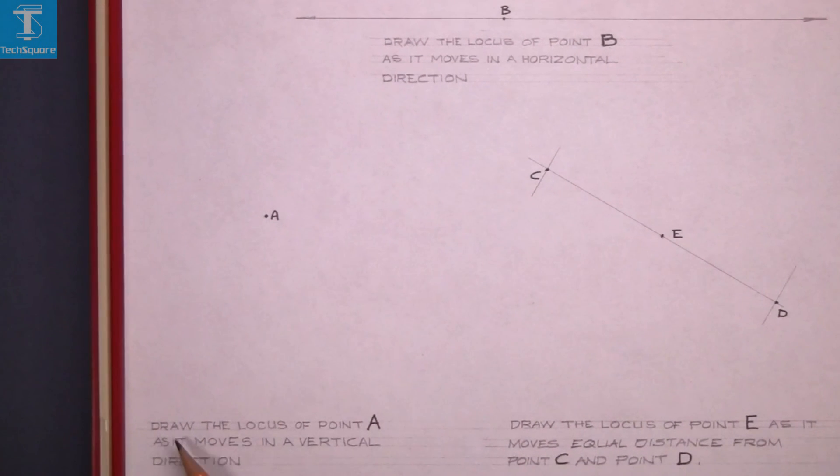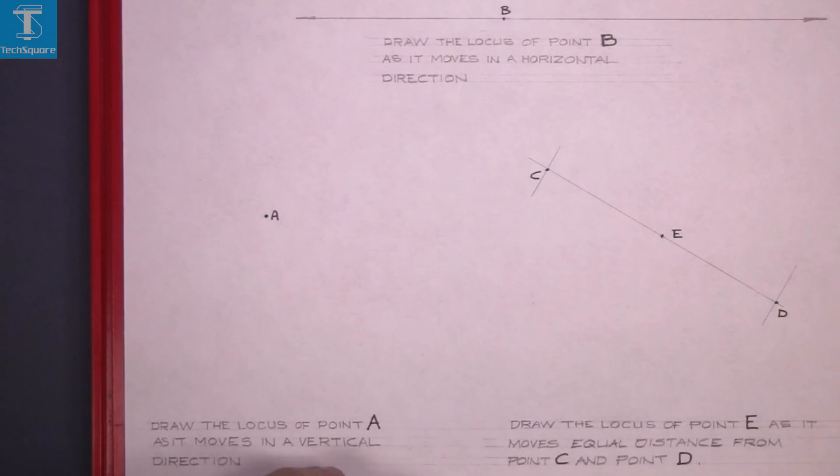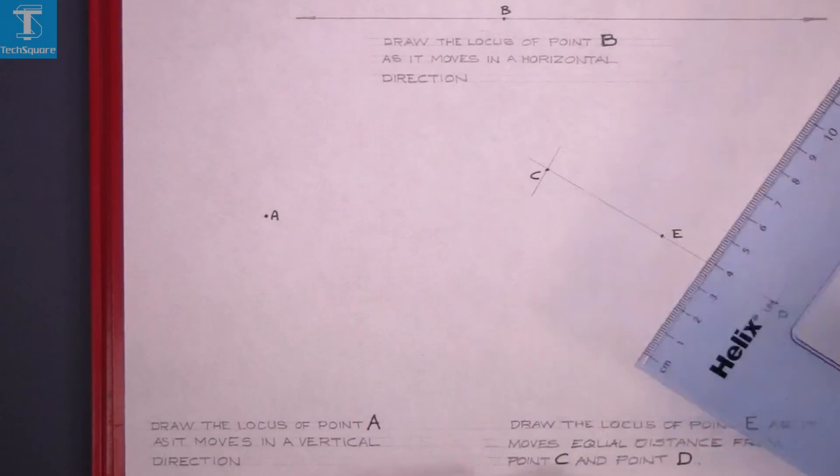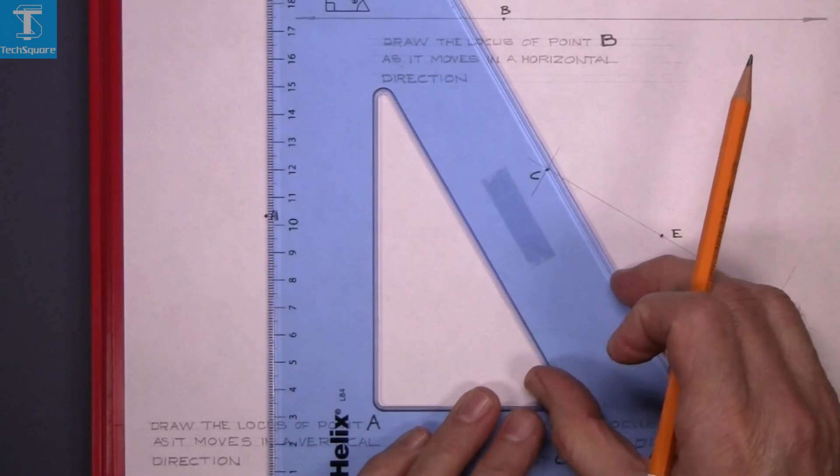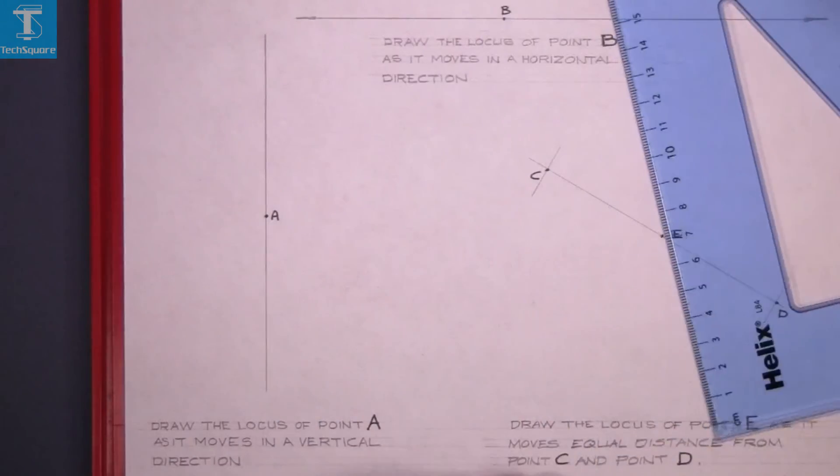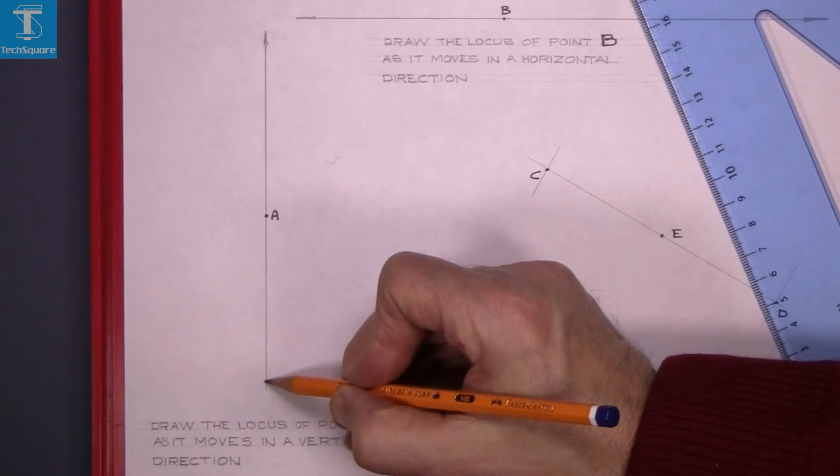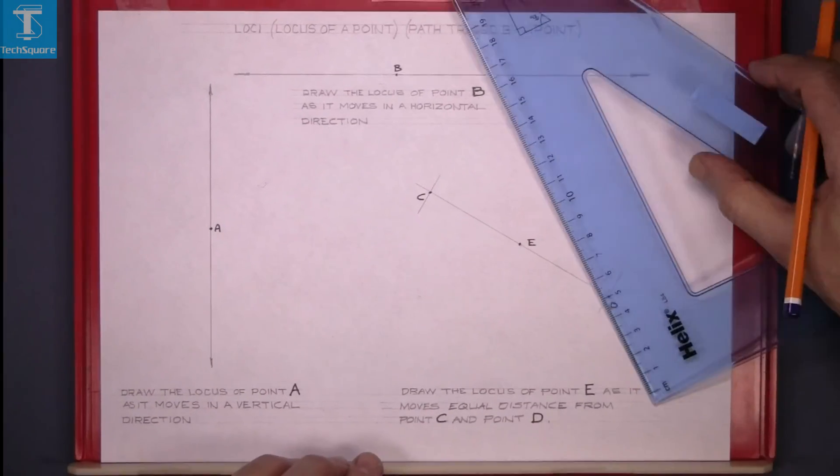Now the next question here is: draw the locus of point A as it moves in a vertical direction. So we have point A here. So we draw a vertical line through A and that answers that question. That's the path traced by point A as it moves in a vertical direction.